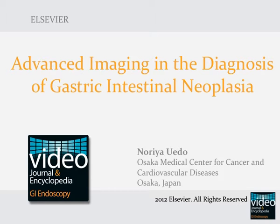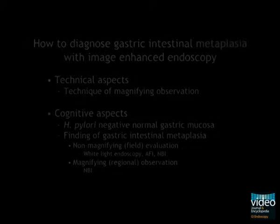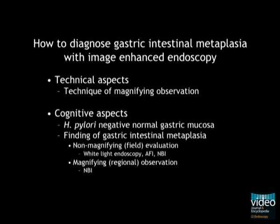This video explains how to diagnose gastric intestinal metaplasia with image-enhanced endoscopy, such as autofluorescence imaging or narrowband imaging with or without magnification. The techniques of magnifying observation, endoscopic findings of H. pylori negative normal gastric mucosa, and endoscopic findings of gastric intestinal metaplasia are explained.